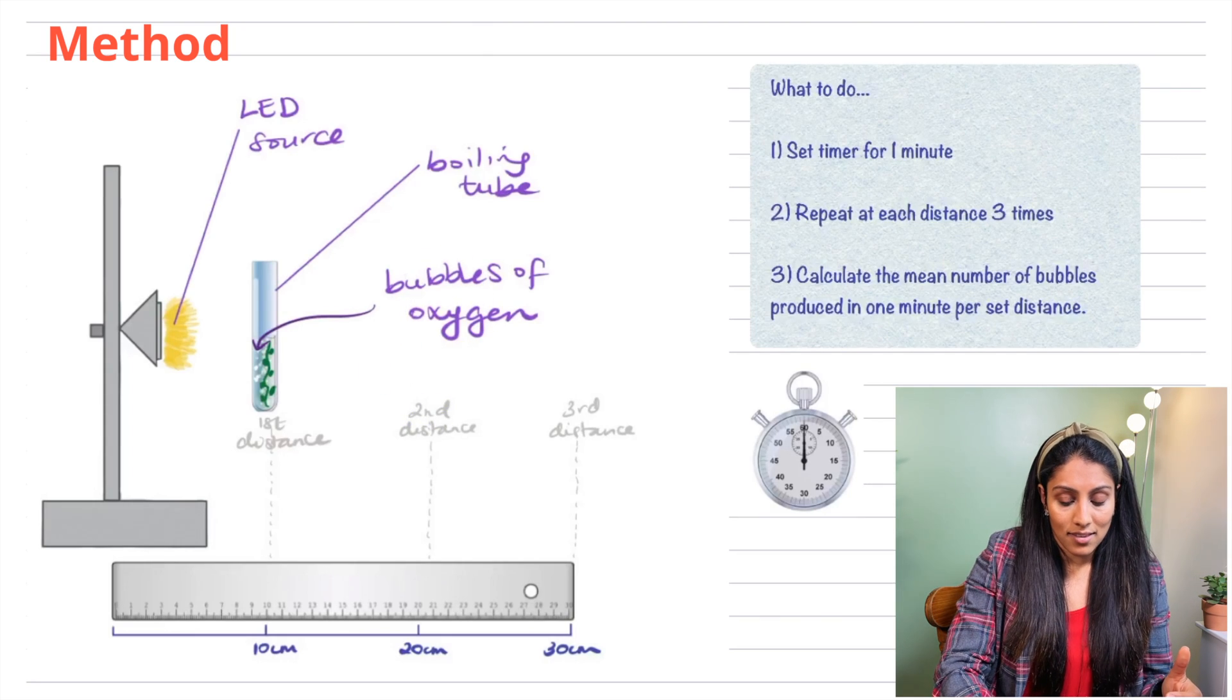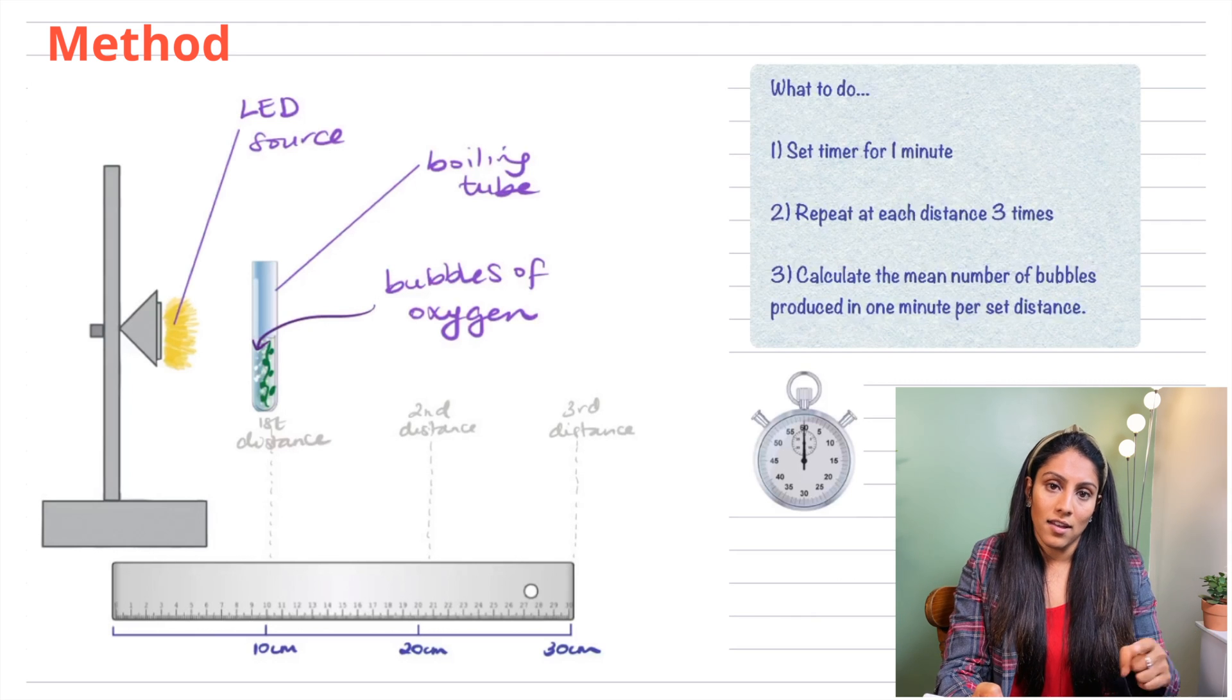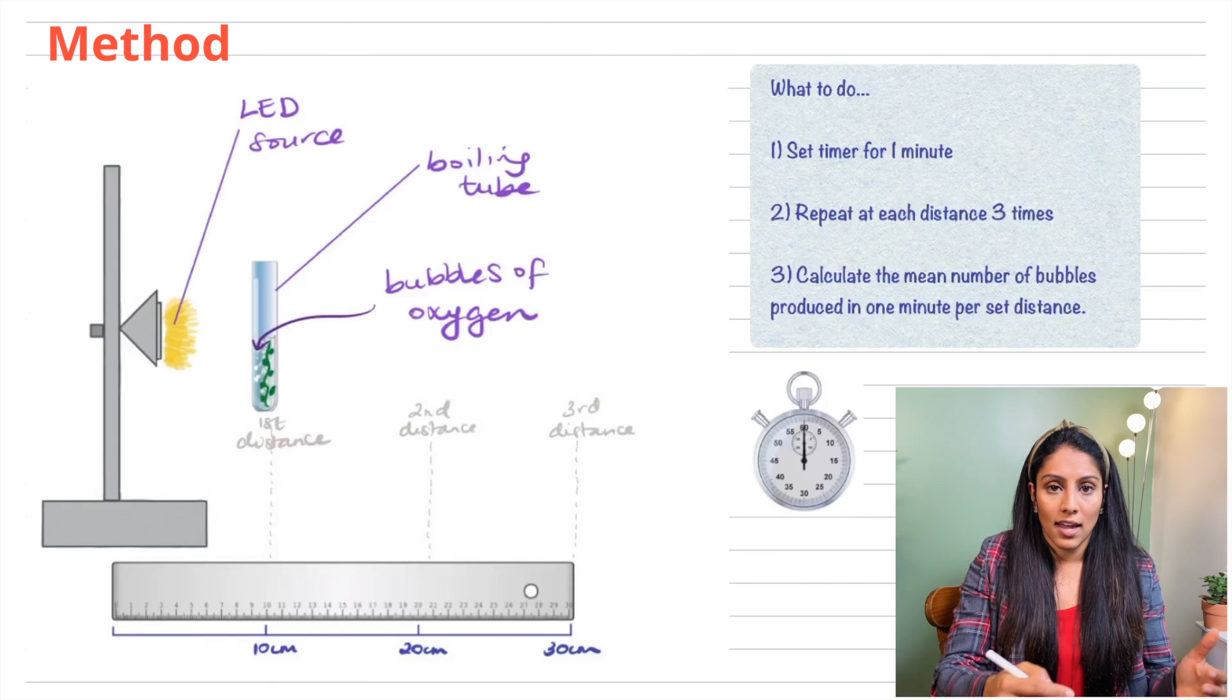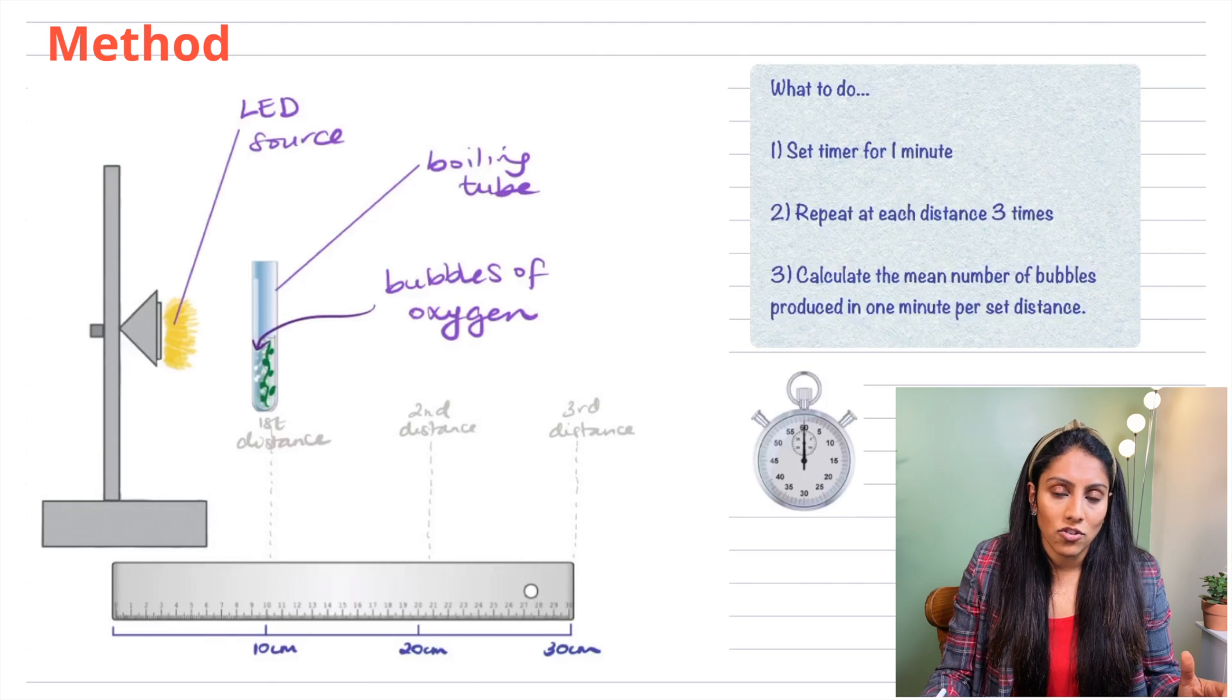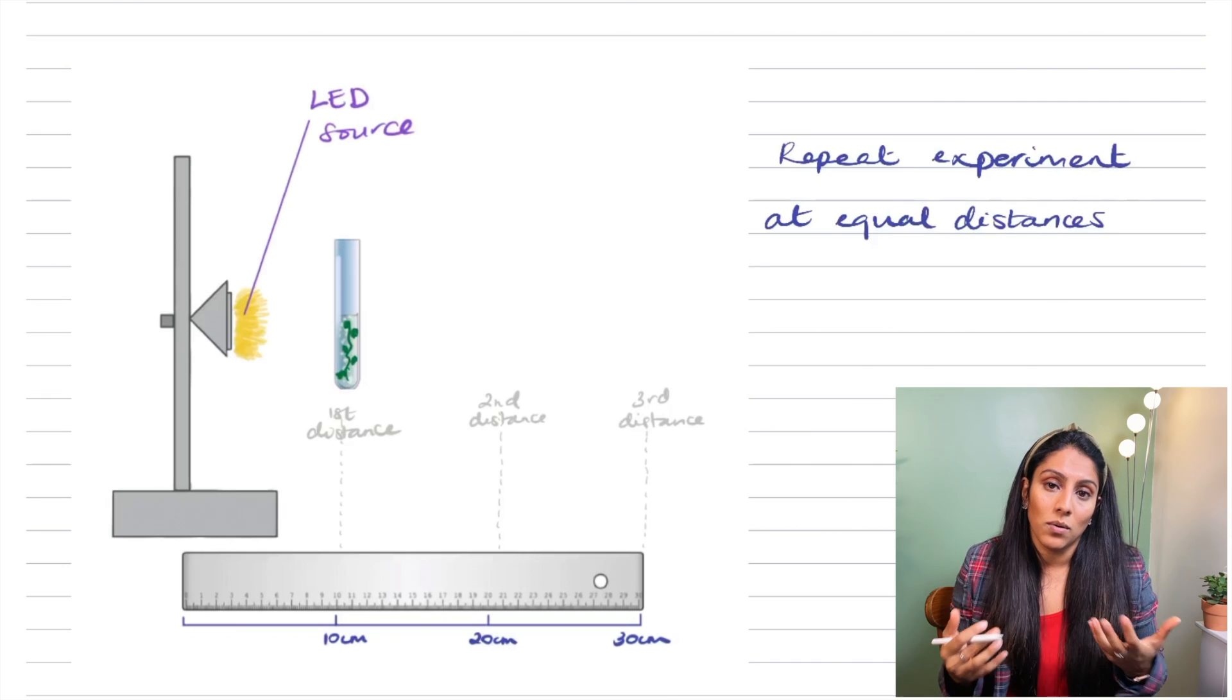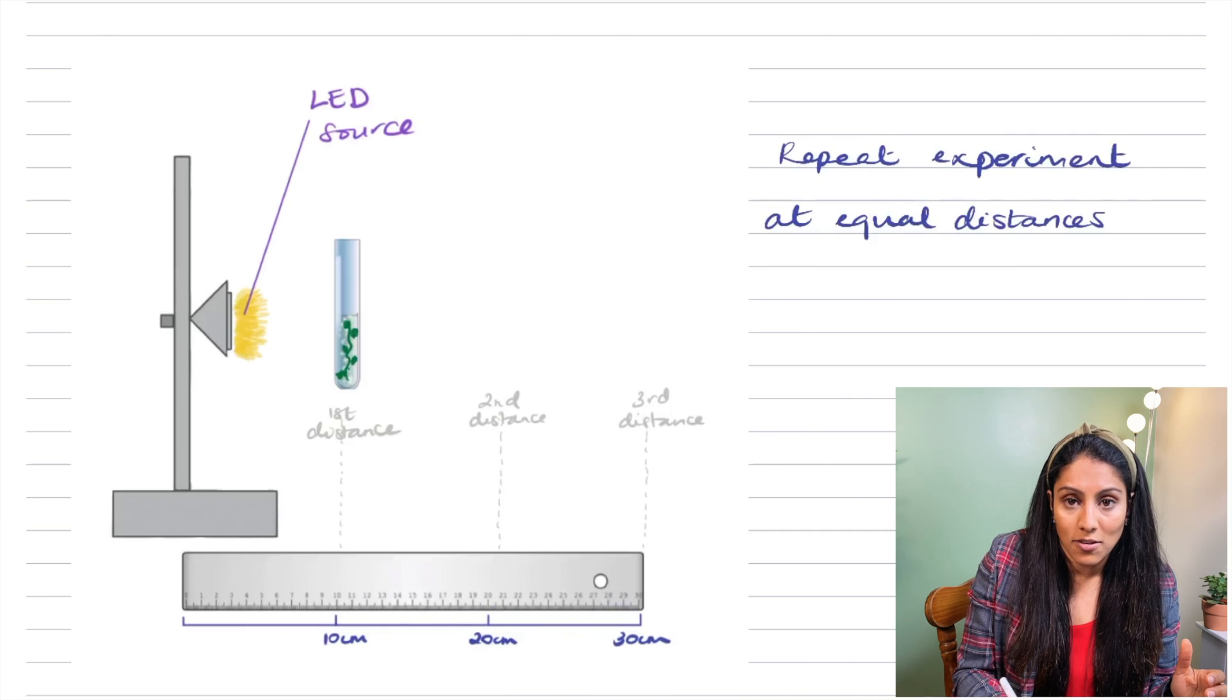You would then go to the second distance which in this case is 20 centimetres and you'll do the whole thing again. So one minute and you repeat that three times and then you do that again until you had a sufficient amount of data. You also want to bear in mind that you want to repeat the experiment at equal distances. So in my experiment I've done it every 10 centimetres.